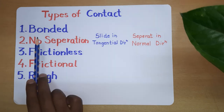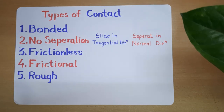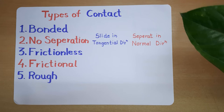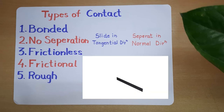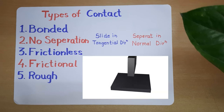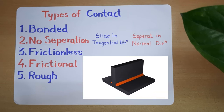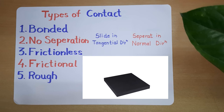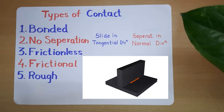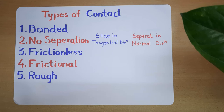The first one is bonded contact. When we say two bodies are bonded to each other, they cannot slide in the tangential direction and they cannot separate in the normal direction. So bonded contact is essentially a welded or glued contact where bodies will not separate from each other and will not slide in the tangential direction.